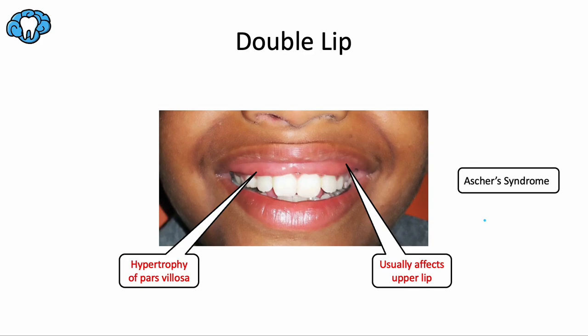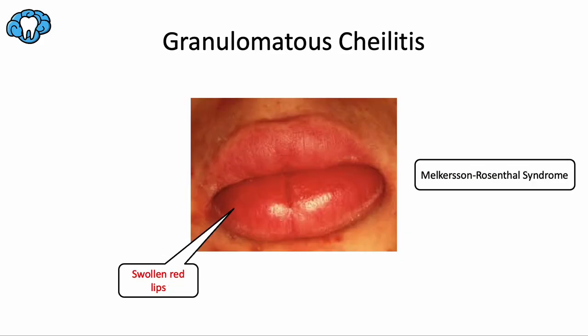Double lip can occur in isolation or as part of Ascher's syndrome. Granulomatous cheilitis is a rare condition that causes swollen, firm, cracked, and bright red lips. Sometimes it's related to other inflammatory disorders and other times it occurs in isolation, but this is an inflammatory process. The swelling tends to come and go, but the condition is chronic for most people. Corticosteroids can help reduce the swelling and may help prevent permanent lip damage.